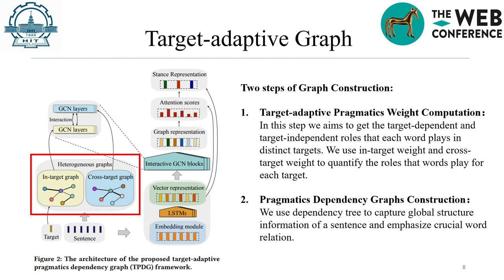The target-adaptive graph contains an in-target graph and a cross-target graph. There are two steps to construct the target-adaptive graph. The first step is target-adaptive pragmatics weight computation. The second step is pragmatics dependency graph construction, where we use a dependency tree to capture global structural information of a sentence and emphasize crucial word relations. The target-adaptive graph is one of the inputs of the interaction GCN blocks, making it a core component of our proposed model.